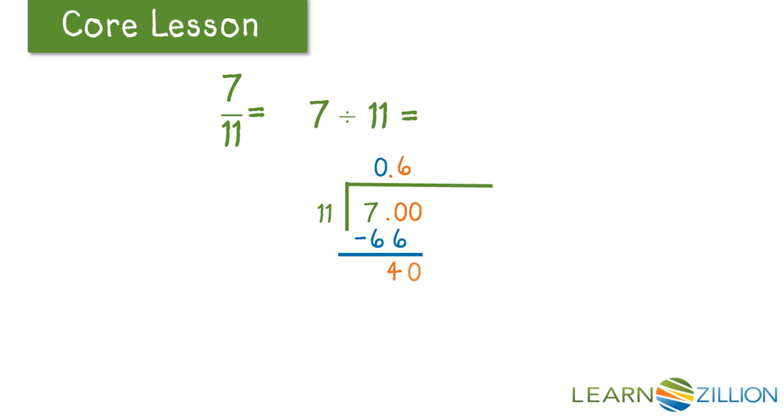We add a zero. Zero comes down. Eleven goes into forty three times. We subtract and we get a remainder of seven. We add a zero. Zero comes down in our answer. Eleven goes into seventy six times, and we get a remainder of four.